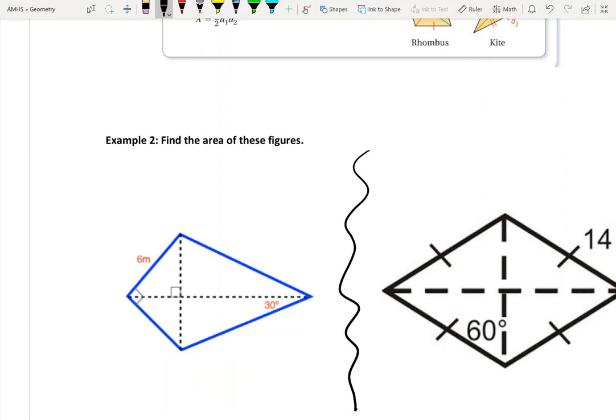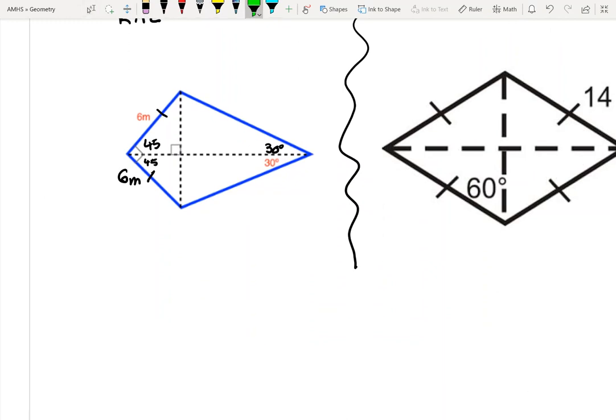Looking at the kite over here, I'm going to do that one first. All I know is this one side is 6 centimeters. I do know that in kites, the consecutive sides are congruent. This is where we reach back into Chapter 6. I know that my opposite angles are bisected. This 30 degrees here gives me 30 degrees here. This is marked as a right angle, and because it's bisected, that means this is 45 and this is 45.